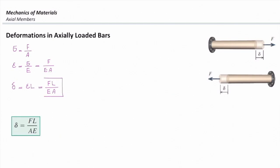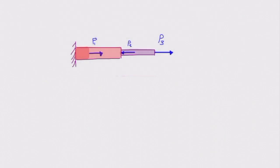Now consider a case where different elements are connected together — two elements subjected to three loads P1, P2, and P3. To determine total deformation, we use the principle of superposition: split the structure into simpler parts, determine the deformation in each part separately, then add them all together to get the total response in the system.